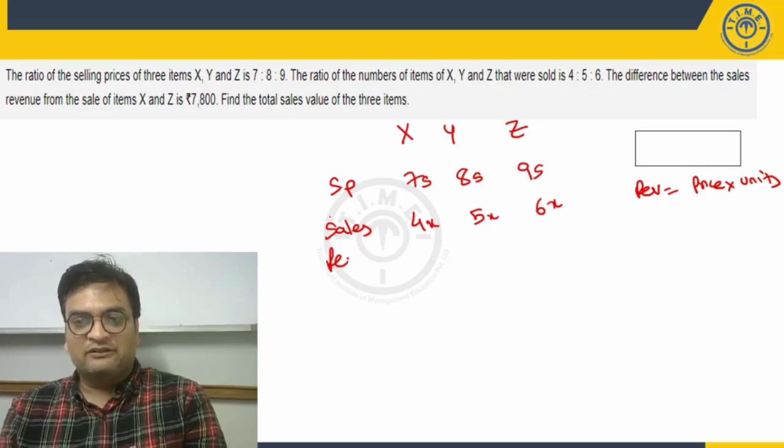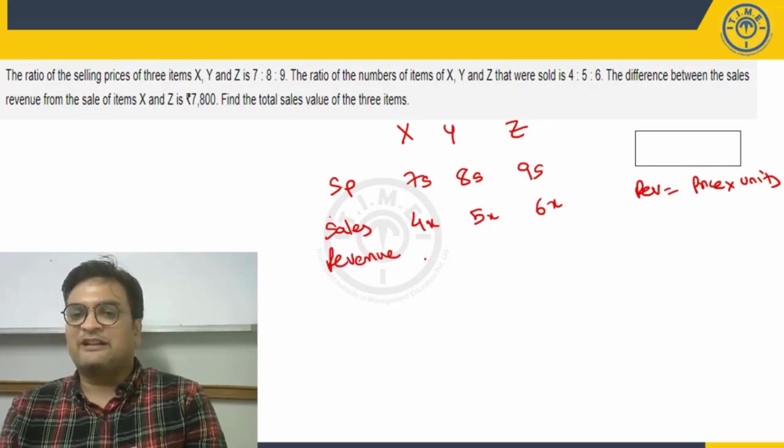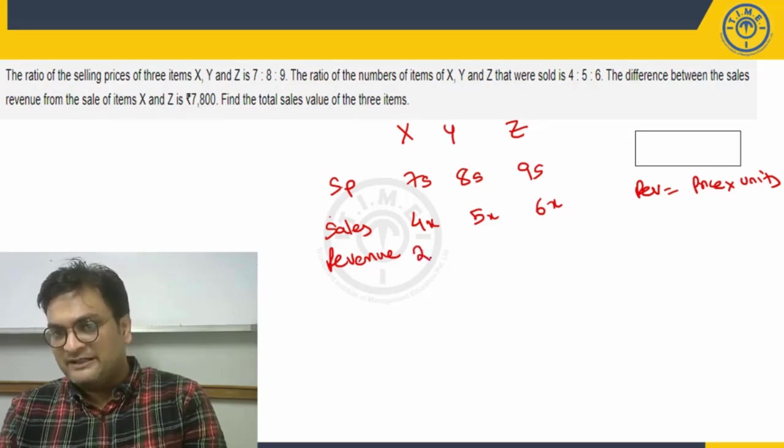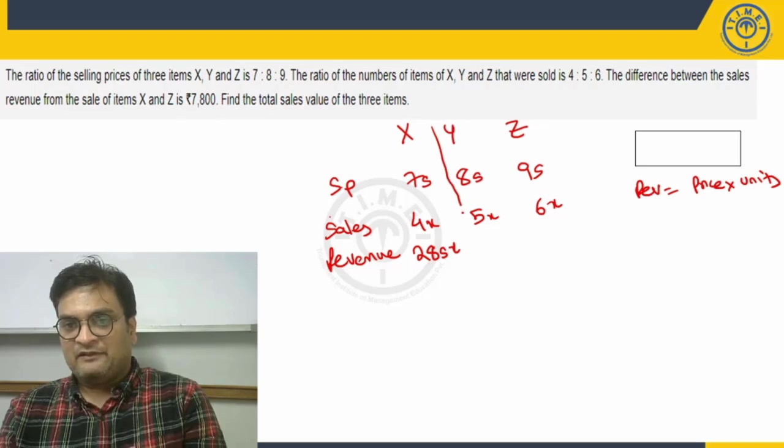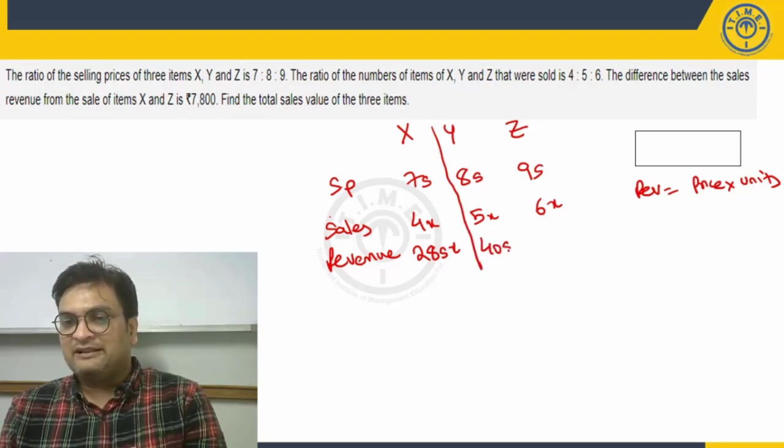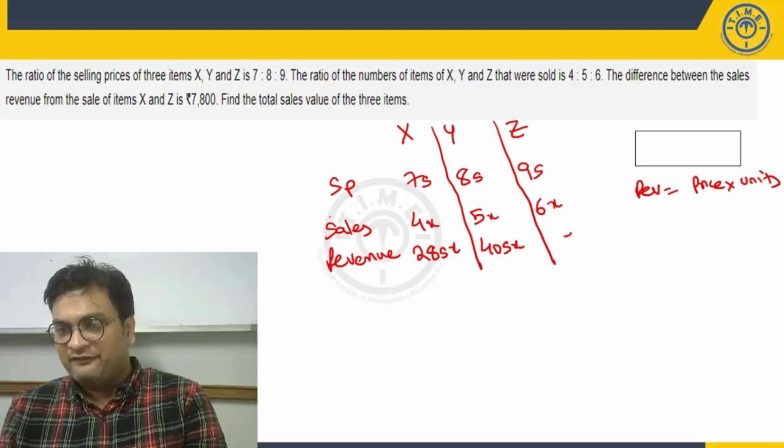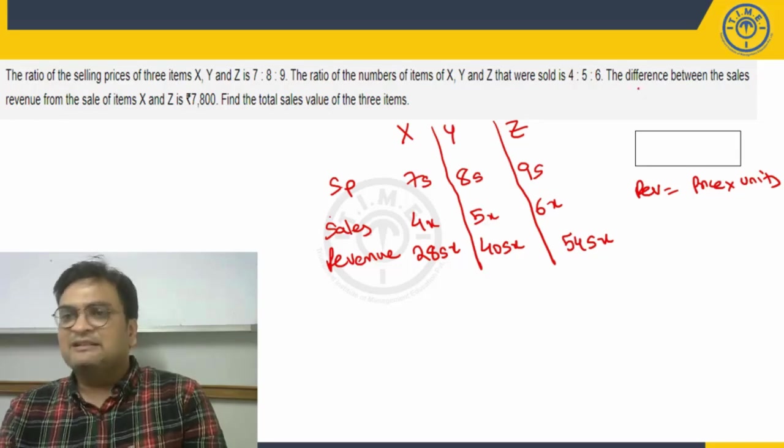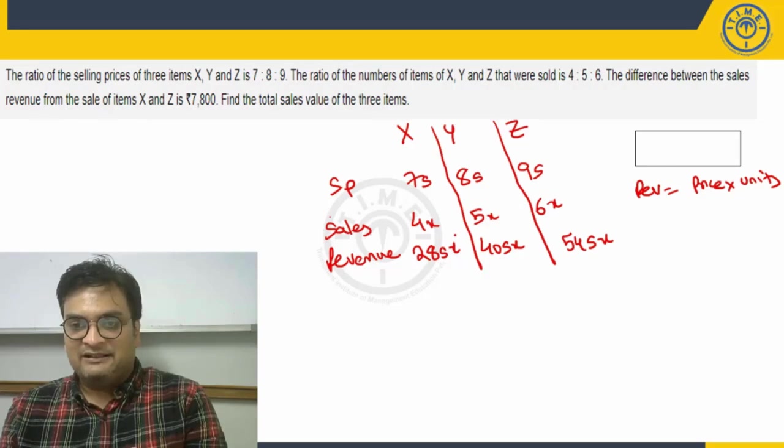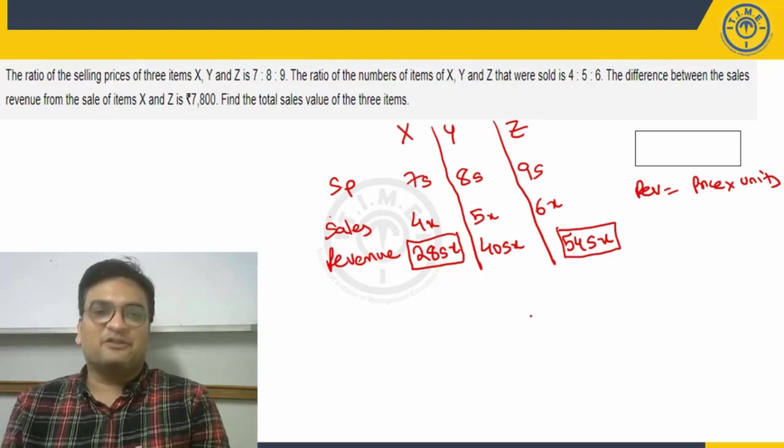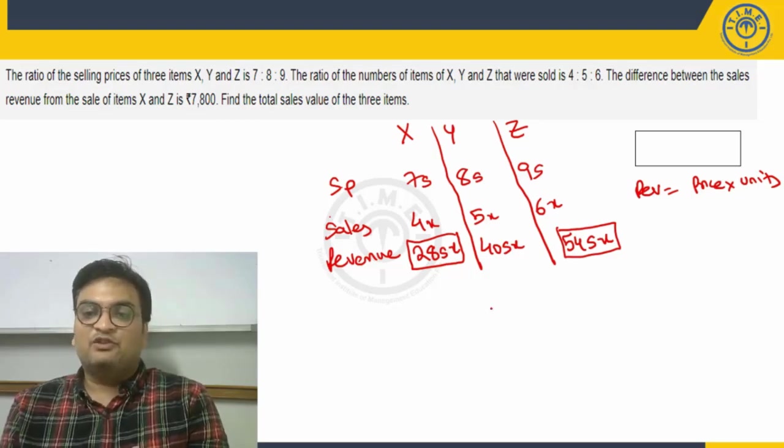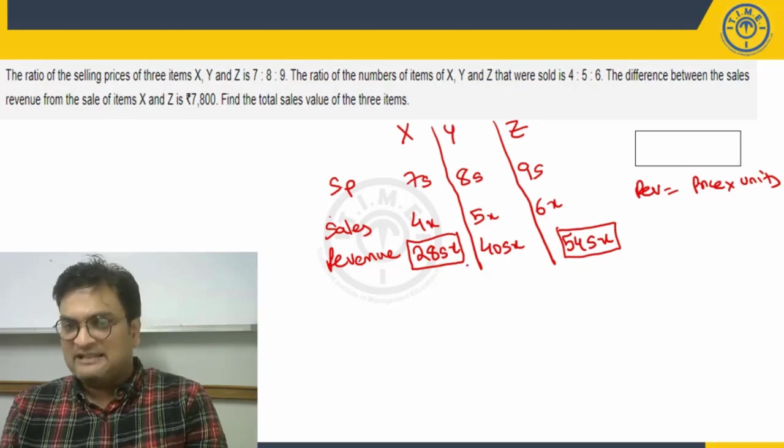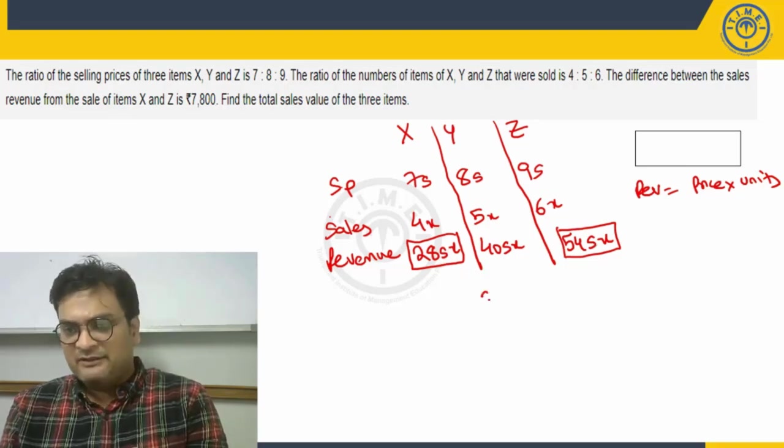Revenue is nothing but the selling price times the number of units sold. Multiplying these two will give me the revenue for each of the companies. For example, revenue for company X is going to be 7 into 4, 28sx. For company Y, 8 into 5, 40sx. 9 into 6, 54sx. These are the revenues that we have for the three companies. Now the question says the difference between the sales revenue from the sales of X and Z, that means this difference here is given to be 7800.